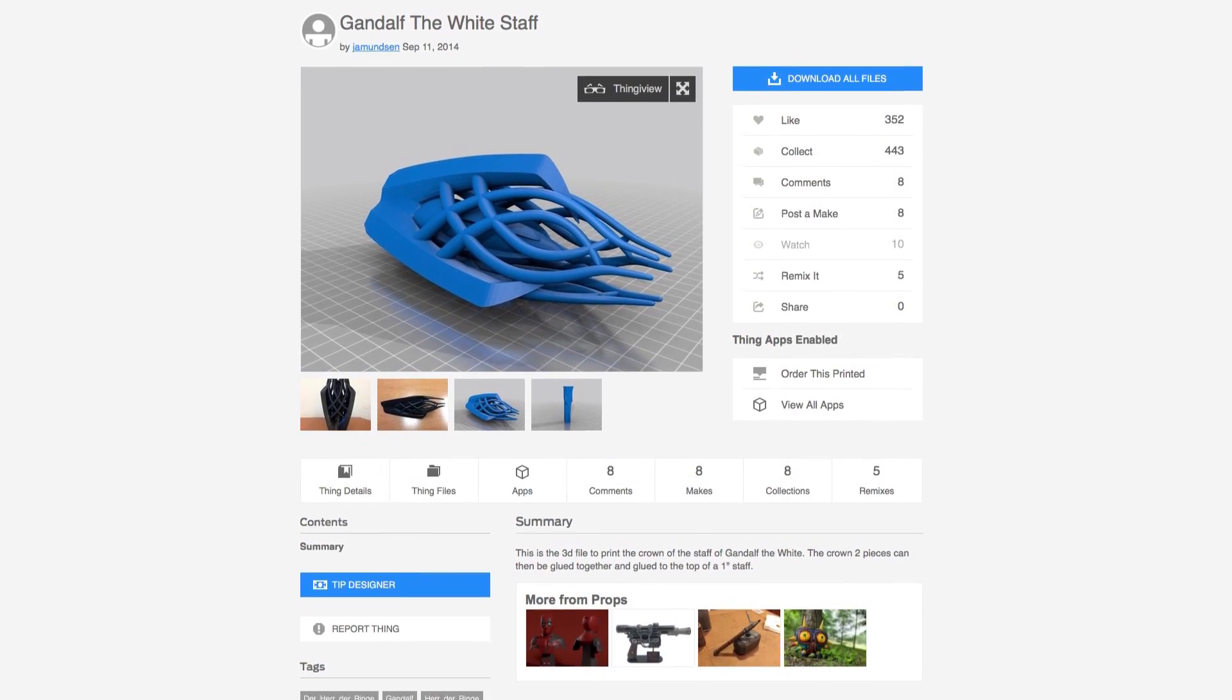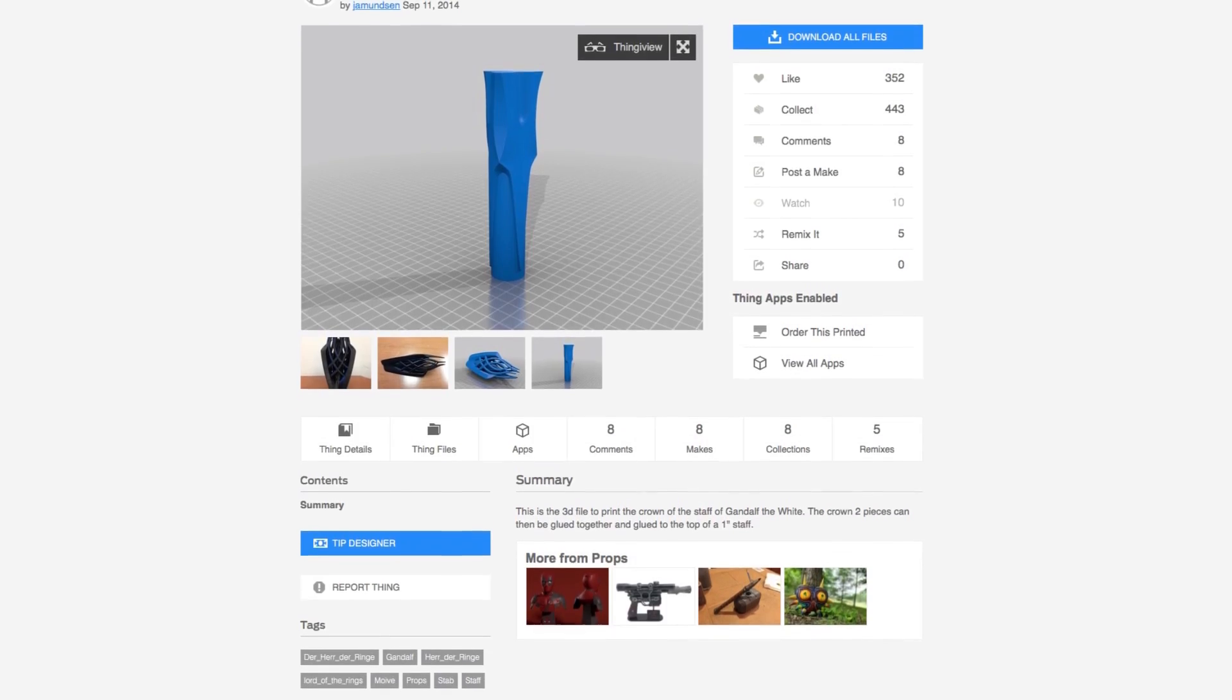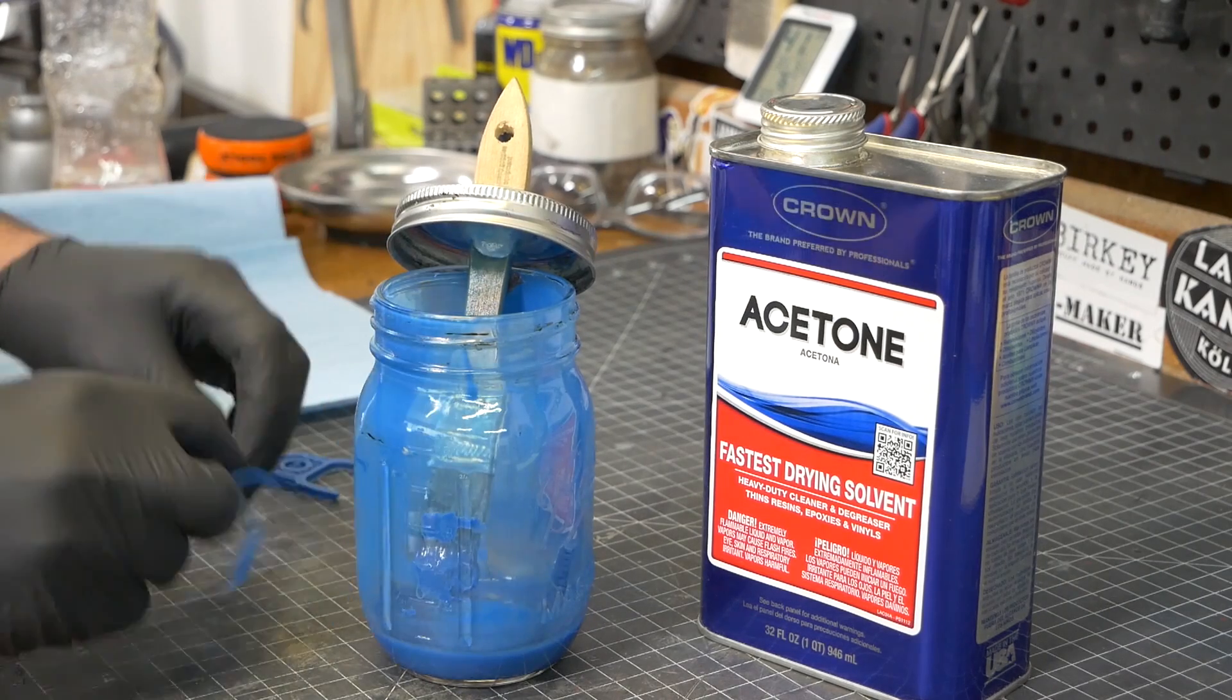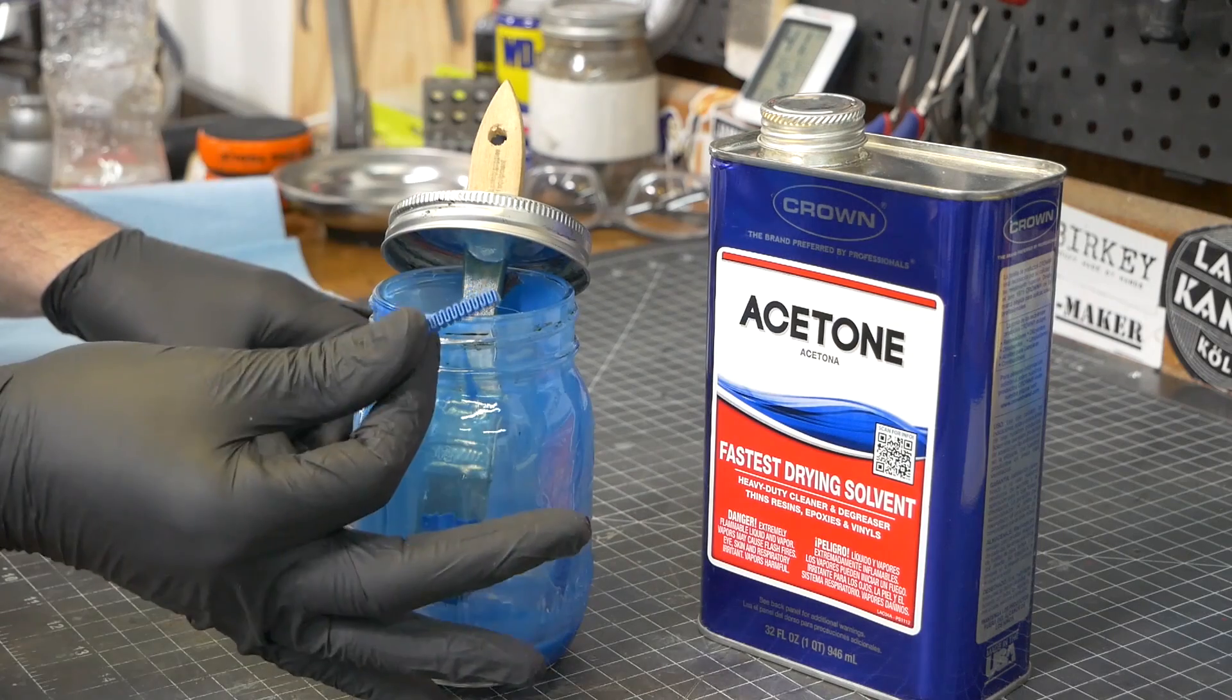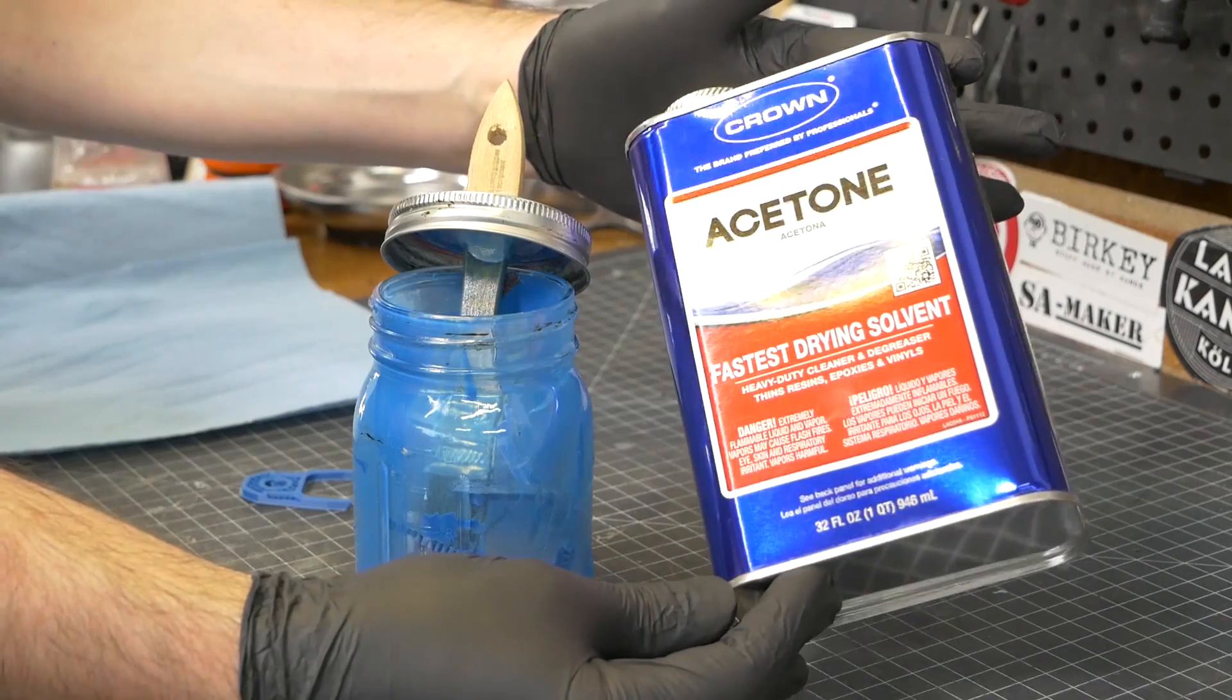This was just going to be a little quick side project, but I ended up using some techniques that were new to me and I wanted to make sure to share them with you. For the staff topper, I used Jemunzen's 3D model over on Thingiverse. The model was printed in ABS filament on our Ultimaker.